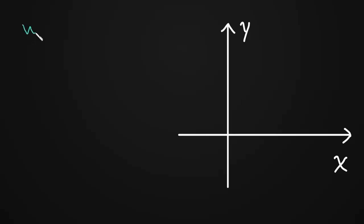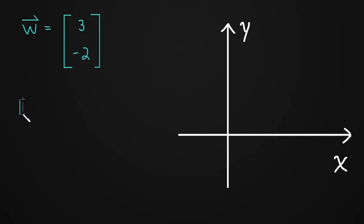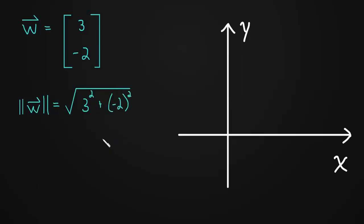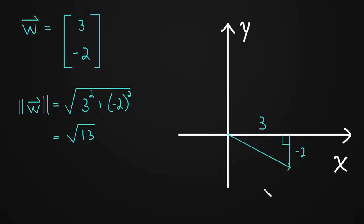Let's do another example. How about W = (3, −2)? The length of W is the square root of 3 squared plus (−2) squared — that's 9 plus 4, so this is the square root of 13. We could graph that: we're going to go over 3, down by 2. Again, we're just talking about the hypotenuse of a right triangle.